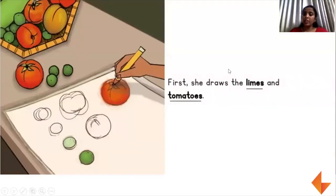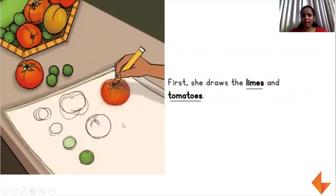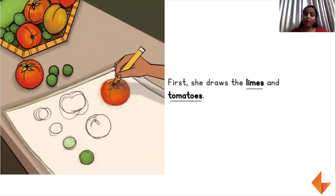First, she draws the limes and tomatoes. Anu sees limes. Anu sees tomatoes. So she is drawing limes and tomatoes. What is the other name for lime? Yes, they are called lemon also.